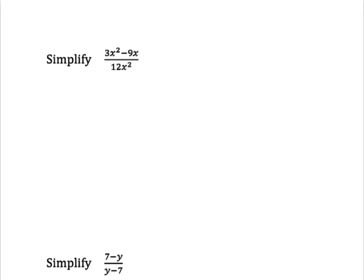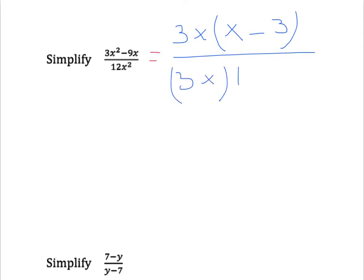Here we have to simplify. To simplify, the first thing we need to do is break down and factor. For example, in the process of factoring we get 3x, then x minus 3. We work with 3x, 12x, 4x, and 3x to factor the expression.